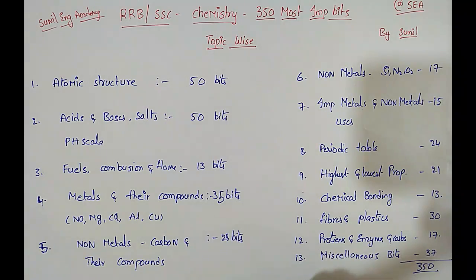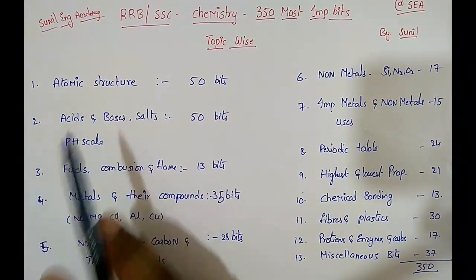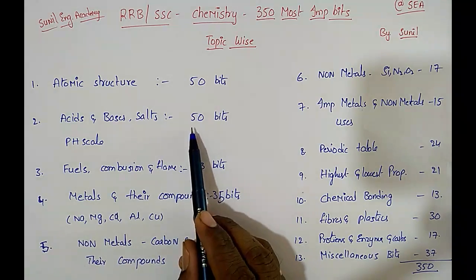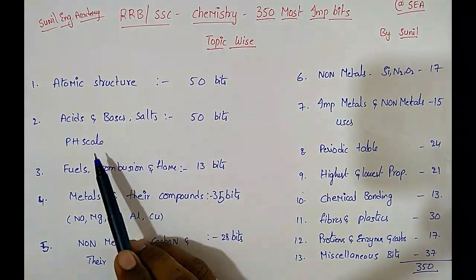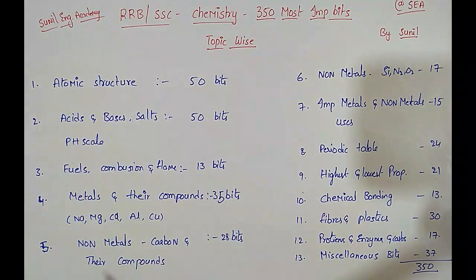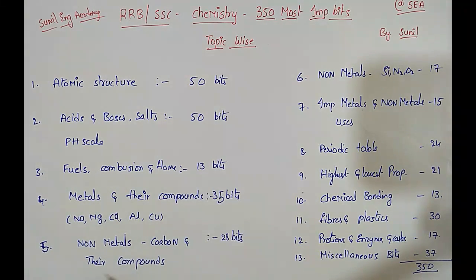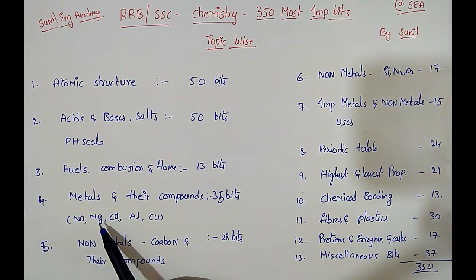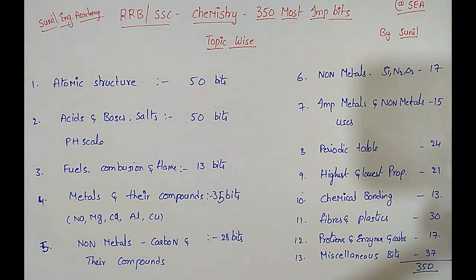In this, I have prepared 50 most important bits on the topic atomic structure, 50 important bits on the topic acids, bases, salts and pH scale. Fuels and combustion and flame — that is 13 bits. Metals and their compounds, that is sodium compounds, magnesium compounds, calcium compounds, aluminum compounds and copper compounds — I have covered 35 important bits.